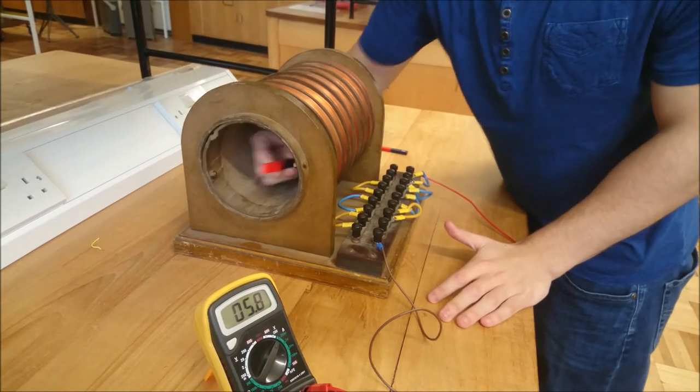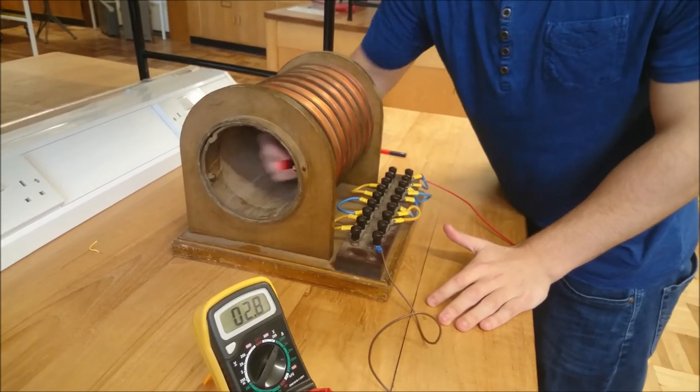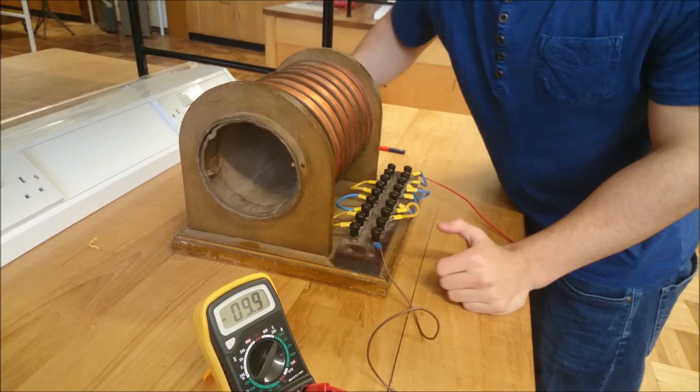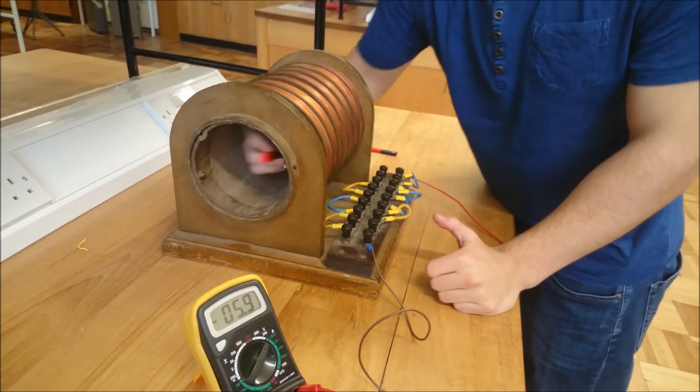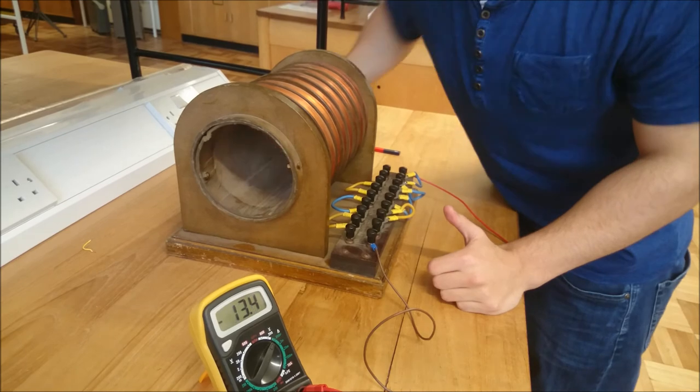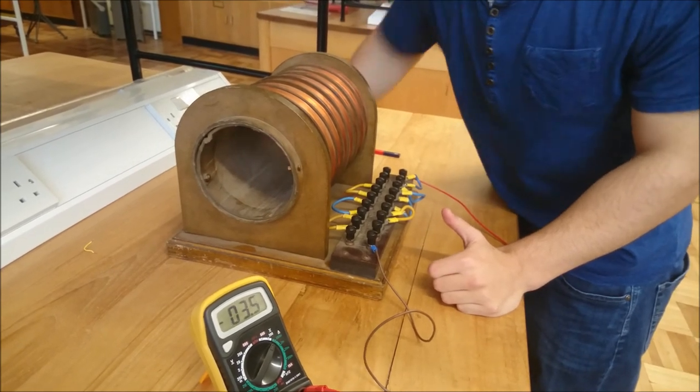This will be a much greater induced EMF, and you can see the reading is a lot bigger than on the smaller coil. You can run the magnet through it faster, and it causes a greater current reading.